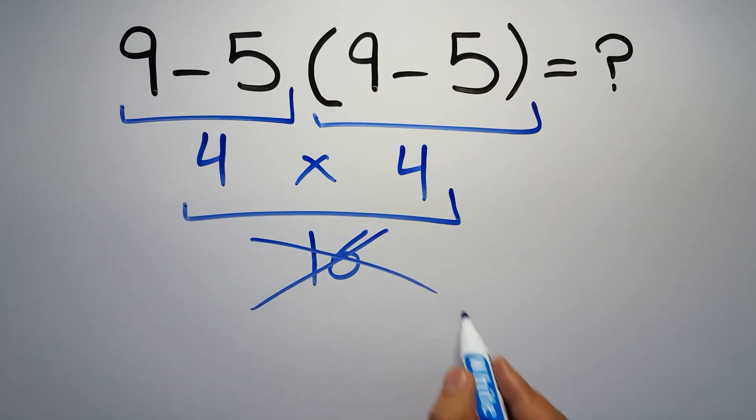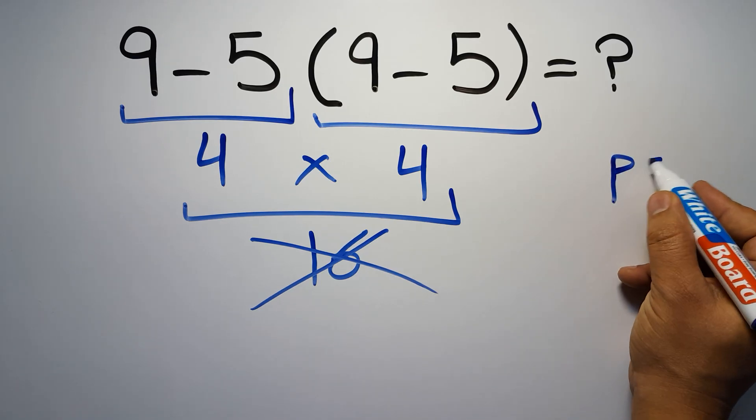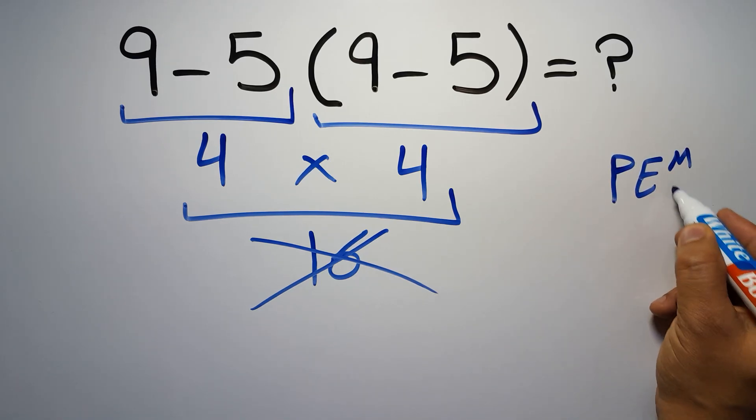But this answer is not correct. Because according to the order of operations, first we have to do parentheses, then exponents, then multiplication or division,